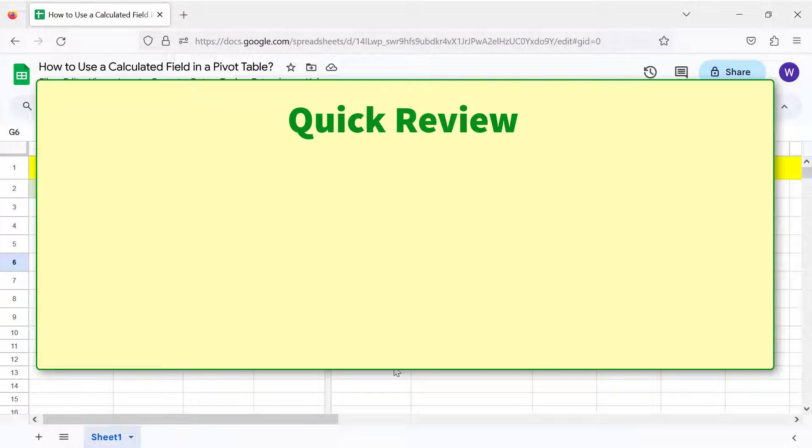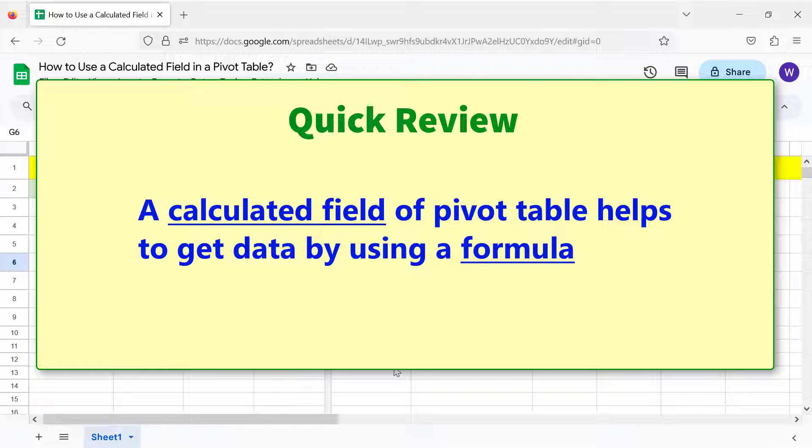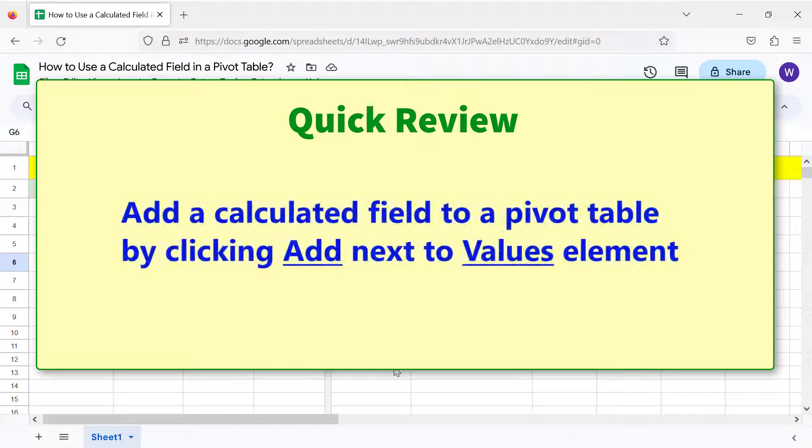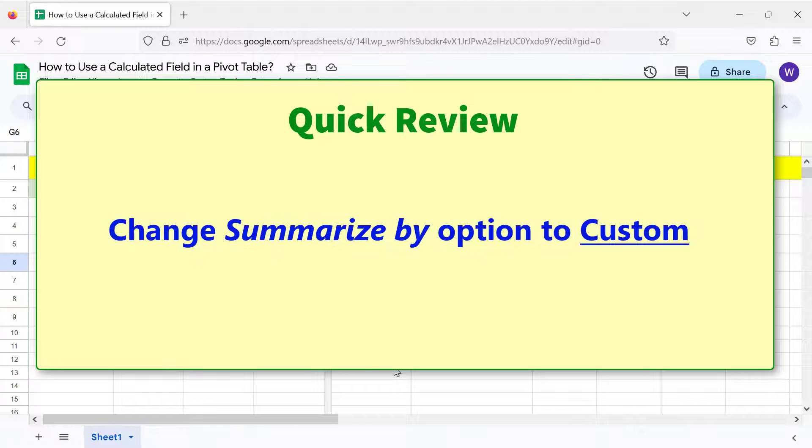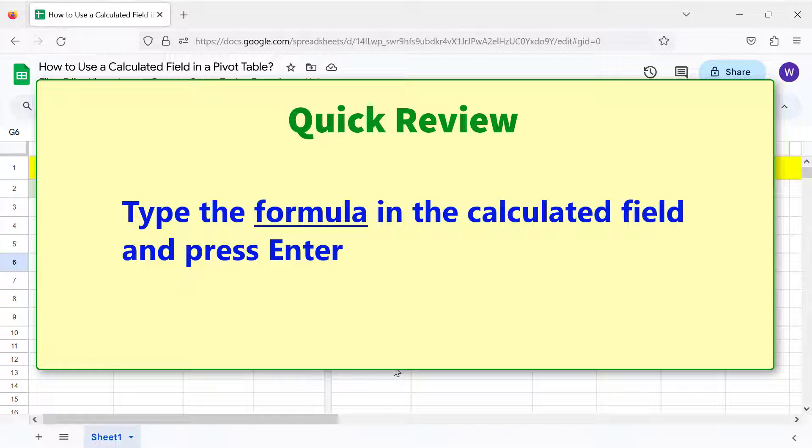Quick review: A calculated field of pivot table helps to get data by using a formula. Add a calculated field to a pivot table by clicking Add next to Values element. Change summarize by option to Custom. Type the formula in the calculated field and press Enter.